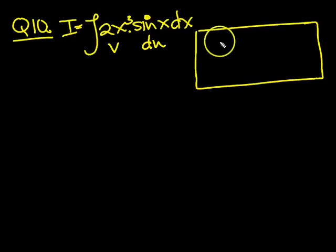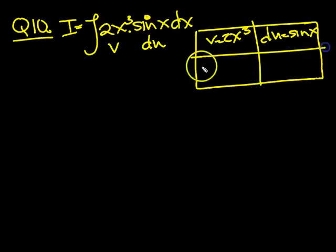Alright, so what have we got then? We've got v is 2x cubed, and then du is sine x. And then du v will be 6x squared, and u will be minus cosine x.